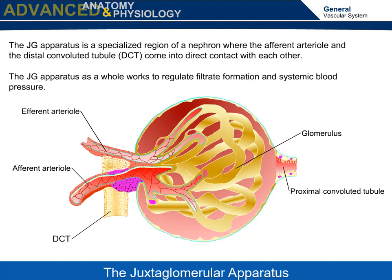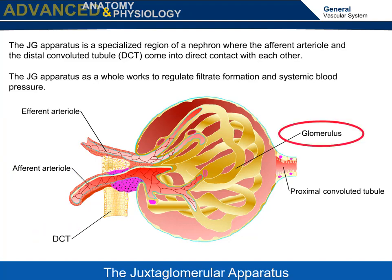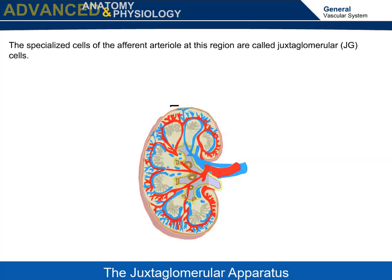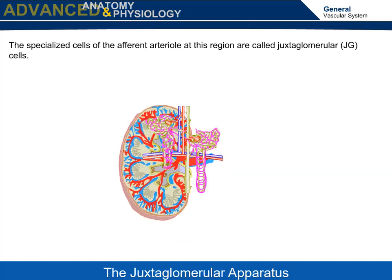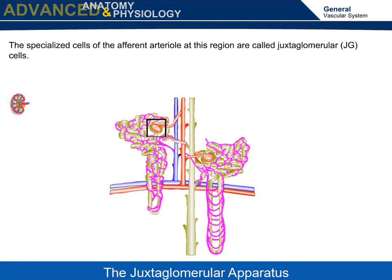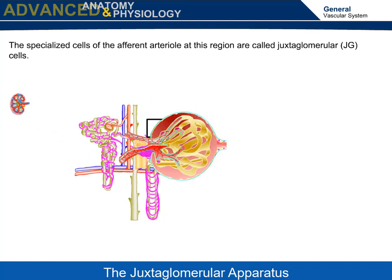In this diagram we can see the efferent arteriole, afferent arteriole, DCT, and glomerulus. The specialized cells of the afferent arteriole at this region are called juxtaglomerular cells.